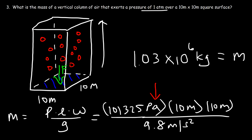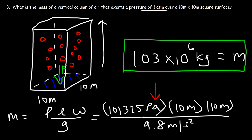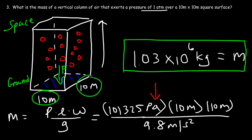That is the mass of air that extends from the Earth to outer space within this vertical column measuring 10 meters by 10 meters. As you can see, there are a lot of air molecules between ground level and outer space, and that is why the pressure is 1 atm.